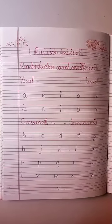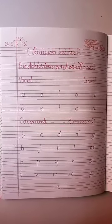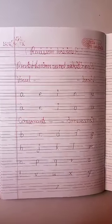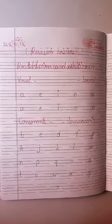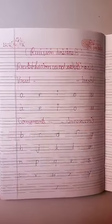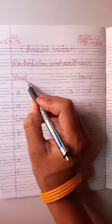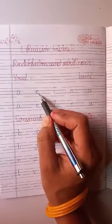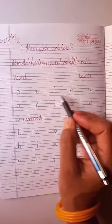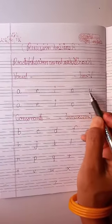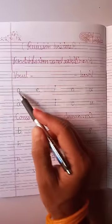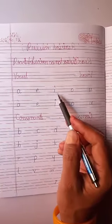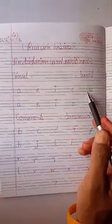Children, vowels and consonants writing is complete. Let's repeat once. Repeat after me — vowels: A, E, I, O, U. A, E, I, O, U.